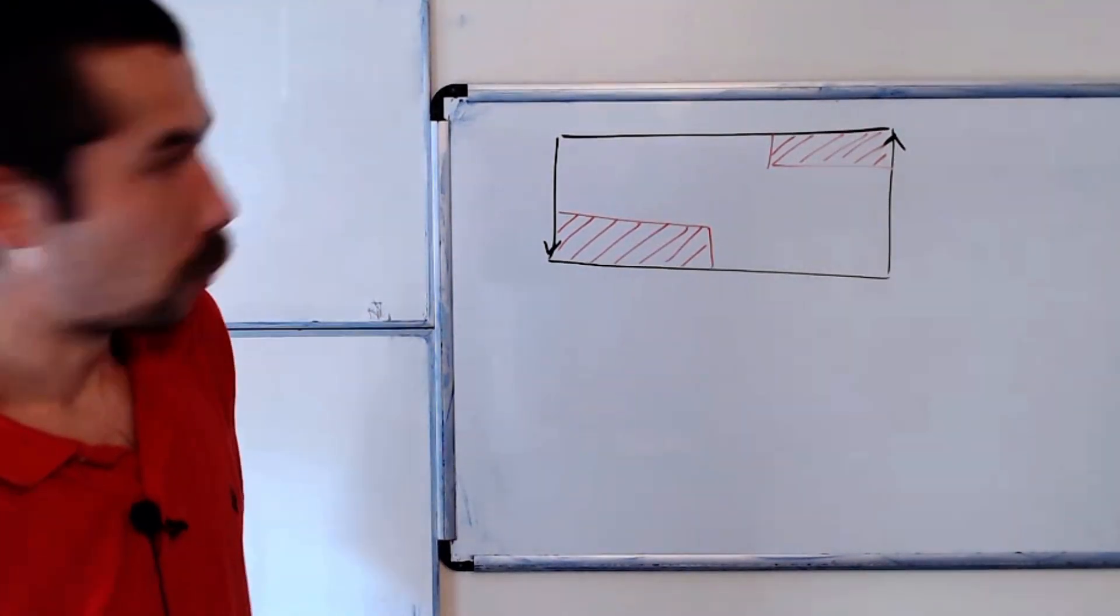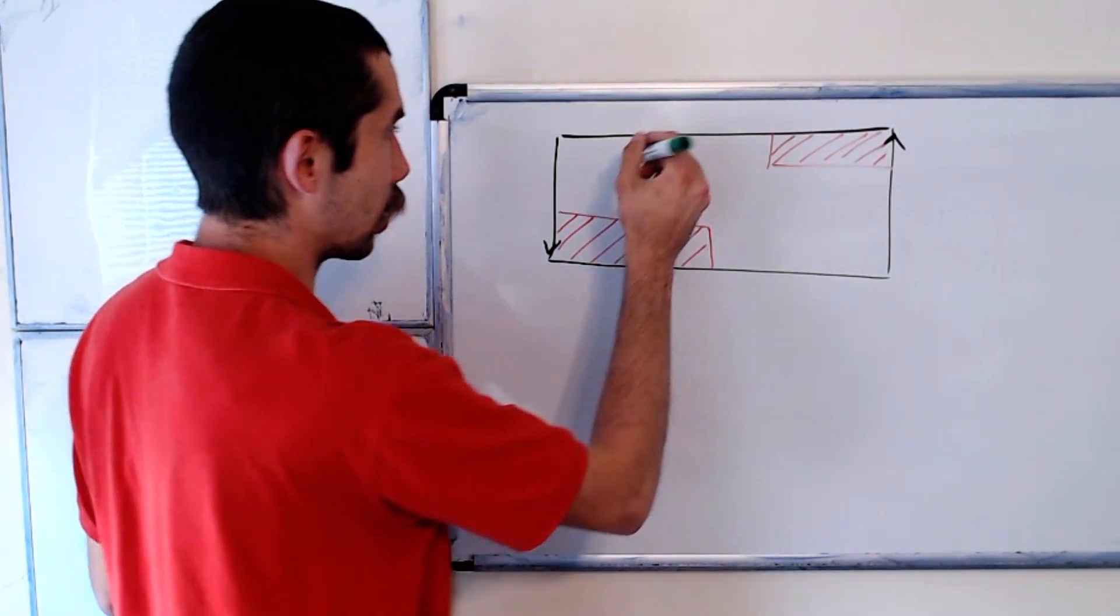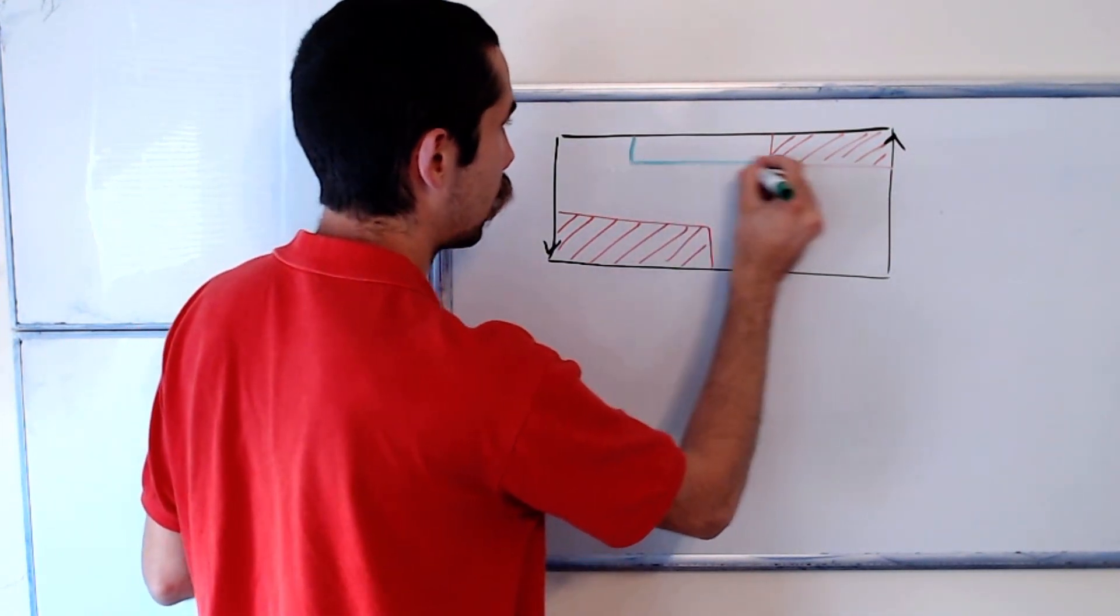Next we could do green, and we want green to be adjacent to all the previous colors, so that's just red here. So here's green.